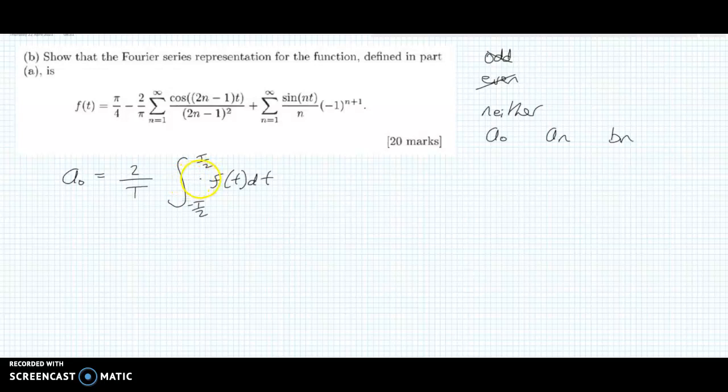Remember from the first video that the period in this question is T equals 2π, so we can sub in 2π for T there. So we get 2π over 2 here, and minus 2π over 2 down here. I'm going to keep this, we'll worry about this later down below.